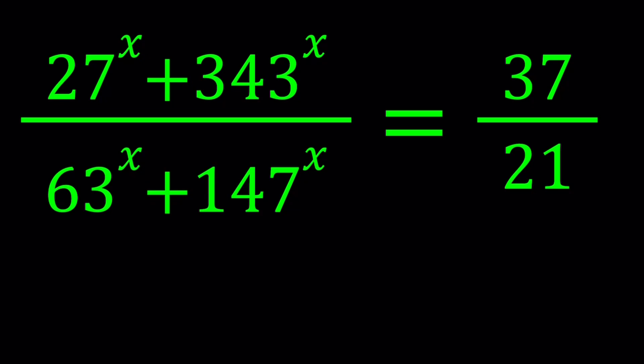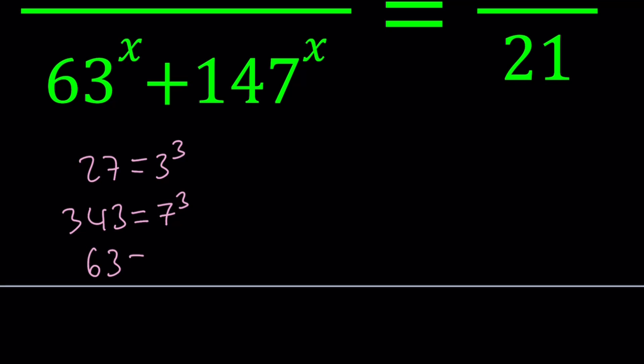In order to solve this problem, I'm going to consider the prime factorization of each of these numbers. 27 is 3^3. Hopefully you know that 343 is 7^3 because it's 49 times 7. And 63 can be written as 7 times 9 or 3^2 times 7. And 147 is 49 times 3, which is 3 times 7^2.